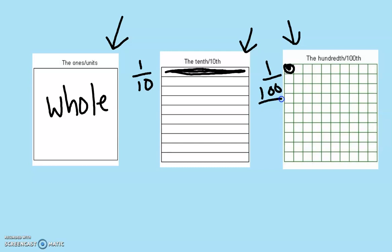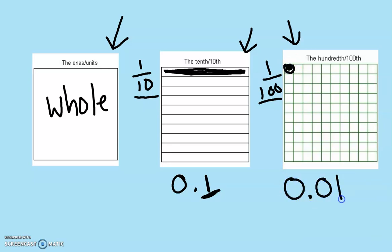If the denominator is a hundred or ten, we can write it as a decimal. This rod written as a decimal would be 0.1, because it is one tenth — that's where we put the tenths. One rod is a tenth. And one unit is one hundredth, so we write it as 0.01.